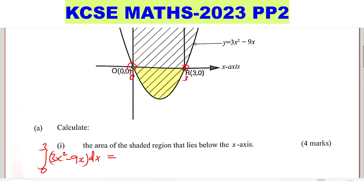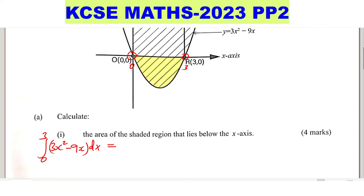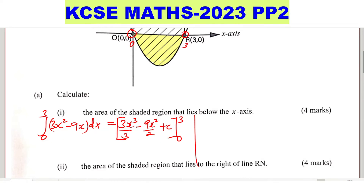When we carry out this integration from 0 to 3, we will get the area of the shaded region below the x-axis. Integrating 3x squared gives 3x cubed divided by 3, and integrating 9x gives 9x squared divided by 2. Simplifying, 3x cubed over 3 becomes x cubed, and 9 over 2 can be written as 4.5, giving x cubed minus 4.5x squared plus c.